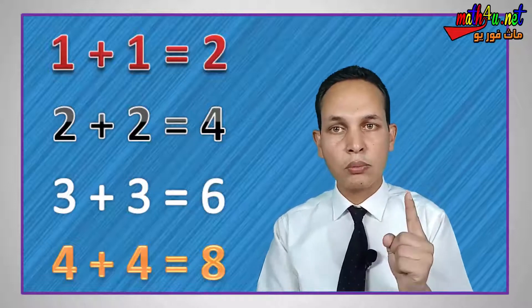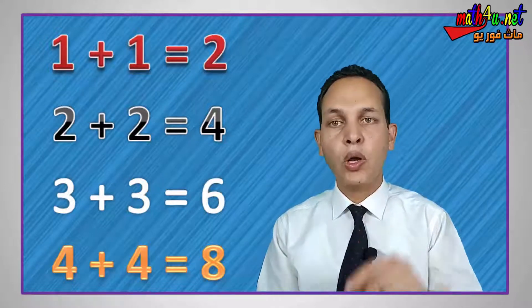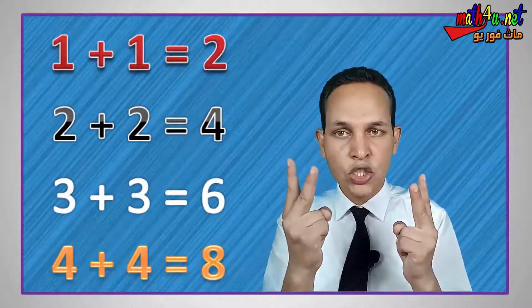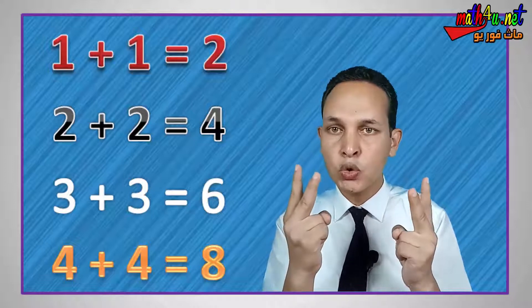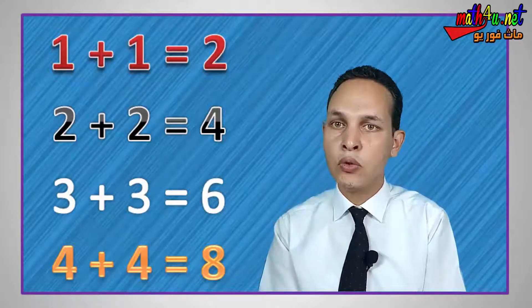If I told you one plus one, I would say two. If I told you two, I would say two assemblies with two. So two plus two equals four.